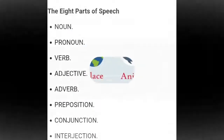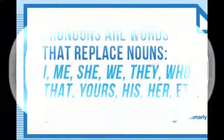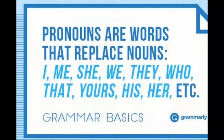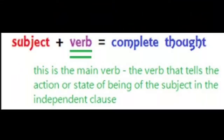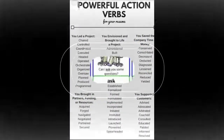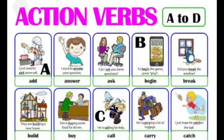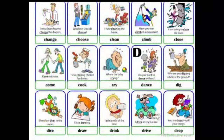We have eight parts of speech: noun, pronoun, verb, adjective, adverb, preposition, conjunction, and interjection. A noun is a person, place, animal, thing, or idea. Pronouns are words that replace nouns — I, me, we, etc.